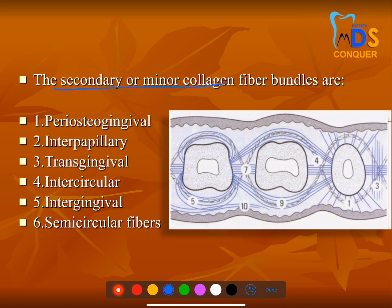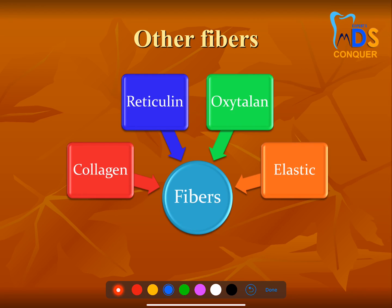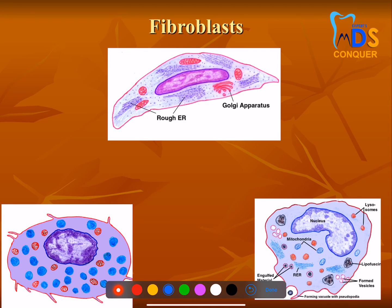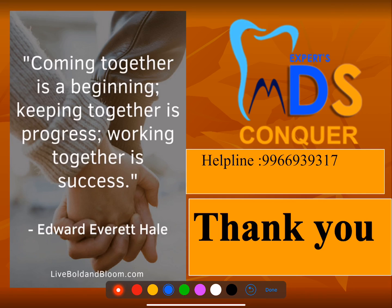Secondary or minor collagen fibers include periosteal-gingival, interpapillary, transgingival, intercircular, intergingival, and semicircular fibers. The ground substance is mainly made up of water, proteoglycans, and glycoproteins. Proteoglycans include hyaluronic acid and chondroitin sulfate; glycoproteins include fibronectin and laminin. Non-collagenous fibers include reticular, oxytalan, and elastic fibers. Fibroblasts are the key cells that produce collagen fibers.